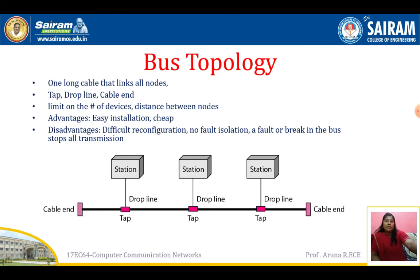In bus topology, a long cable links all nodes using taps and drop lines, with cable ends at both terminations. There are limits on the number of devices and distance between nodes. Advantages: easy installation and cheap, low cost since only one link runs connecting all stations. Disadvantages: difficult reconfiguration, no fault isolation — a fault or break in the bus stops all transmission.